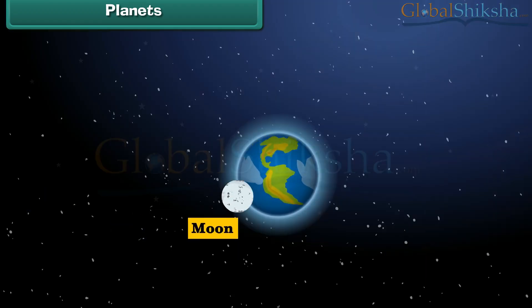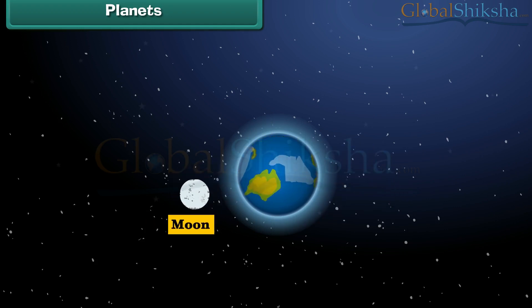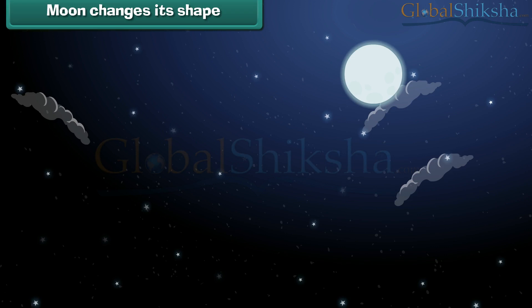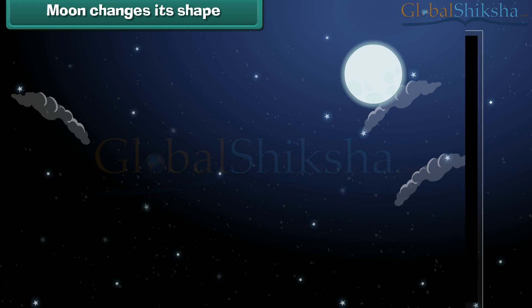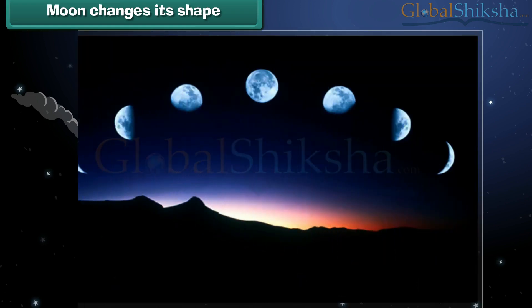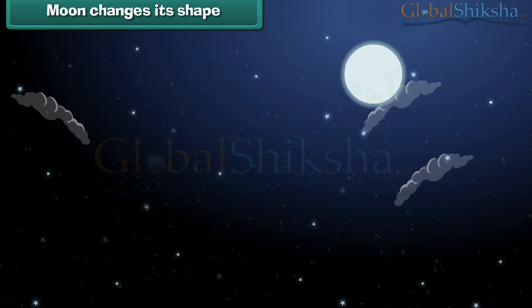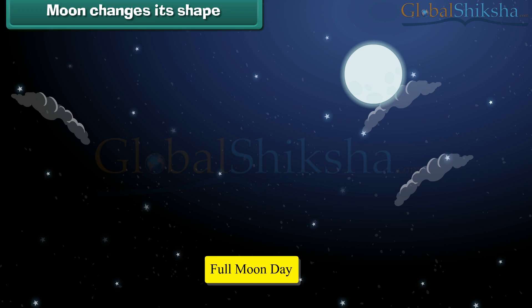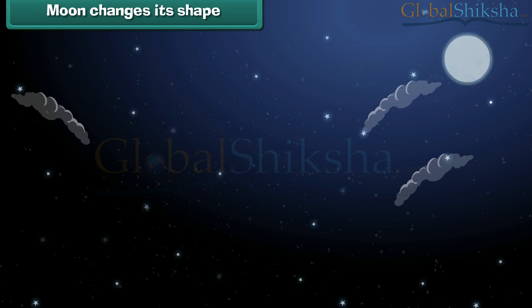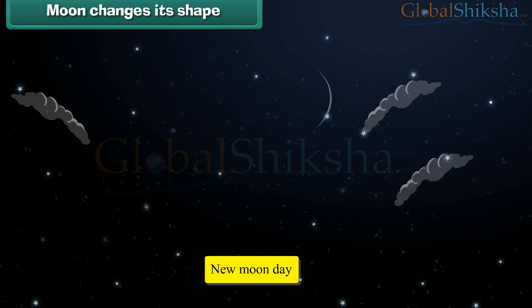Moon is the only natural satellite of planet Earth. It revolves around the Earth in its own orbit. At night, we can also see the moon in the sky. Most of you also know it as Chanda Mama. The shape of moon appears to change every night. Sometimes you observe that the moon appears perfectly round — this day is called a full moon day. While sometimes we cannot see the moon in the sky — this day is known as new moon day.